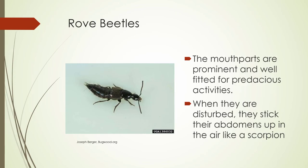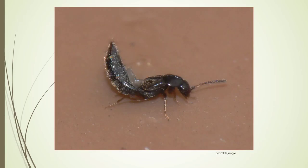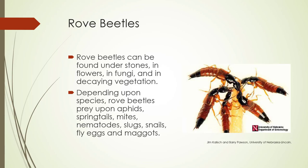Rove beetles are actually predators — very good at predacious activities. You can see their mandibles. When disturbed, they stick up their abdomens in the air to act like a scorpion. You can attract them by keeping some debris in your garden, as they're found under stones, flowers, fungi, and decaying vegetation. Depending on the species, they prey upon aphids, springtails, mites, nematodes, slugs, snails, and maggots — here you can see a batch of them feeding on a housefly maggot.